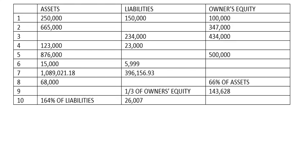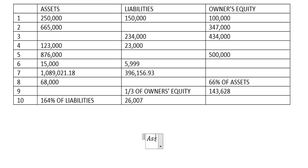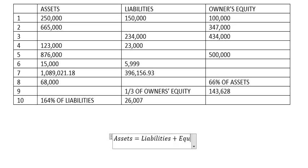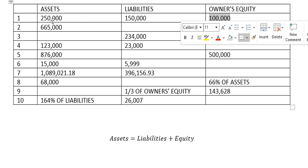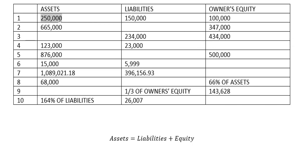Hey guys, welcome back to my channel. Today I want to show you the basics of accounting. The first formula of accounting is: Assets equals Liabilities plus Equity. So that means we have this one plus this one, and we got two hundred fifty thousand on the left.